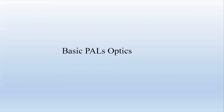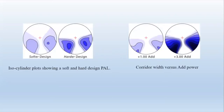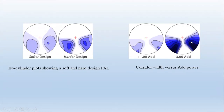Regarding the basic optics of progressive lenses: softer designs have slightly narrower corridors compared to harder designs, except that harder designs have more peripheral distortions. Lower add powers have wider corridors compared to higher adds, where there are more peripheral distortions on the edges and corridor widths are much narrower. This is all basic optics from second and third year study — more of a refresher.